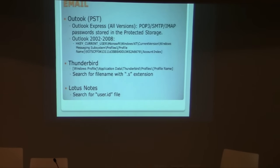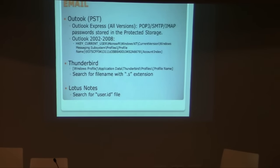I'm going to show you a bunch of tools you can download for free. Here are places for some popular email clients - Outlook, Thunderbird, Lotus Notes. For Outlook, you can find the passwords - they are encrypted, so you have to decrypt them, but it's not that difficult. These tools I'll show you in a few seconds. Those are the locations of the passwords. For Outlook, you can see them in the registry. For Thunderbird, that's in a specific directory. And for Lotus Notes, look for the user ID file. Those are the places where these applications store passwords.